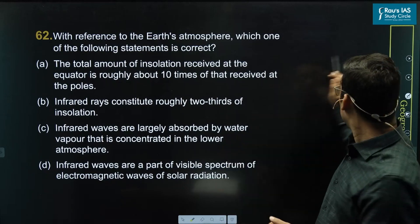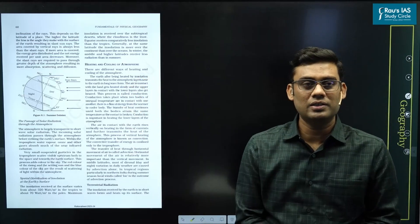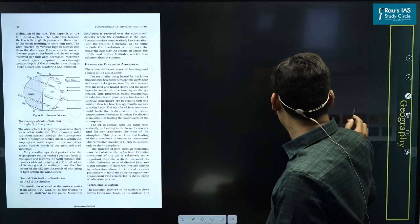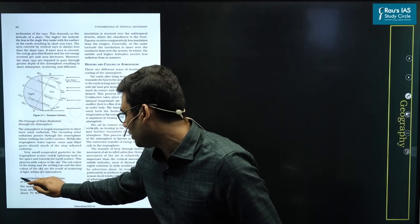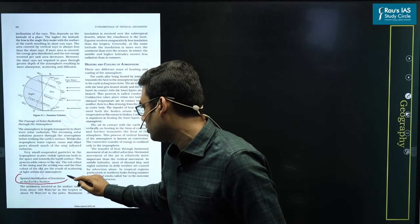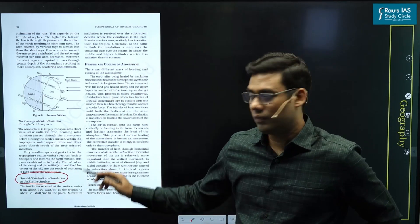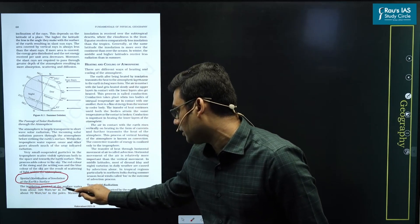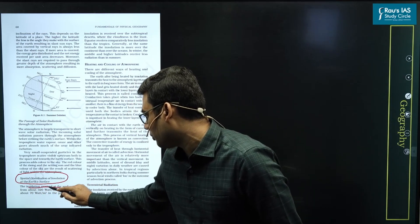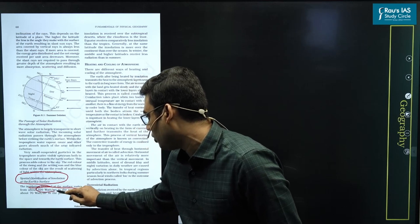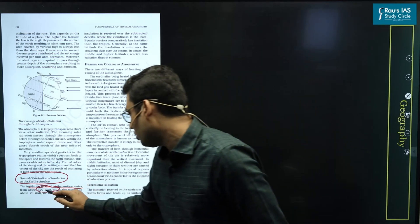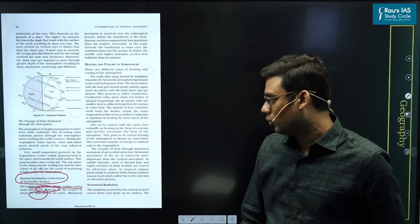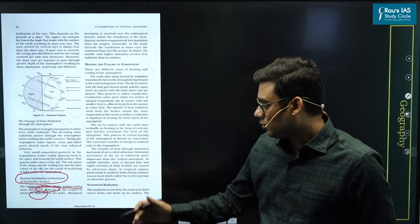The reference can be found from NCERT itself, chapter number 8, which shows spatial distribution of insolation at the earth surface. The statement shows the insolation received at the surface varies from about 320 watt per meter square in the tropics to about 70 watt per meter square at the poles.